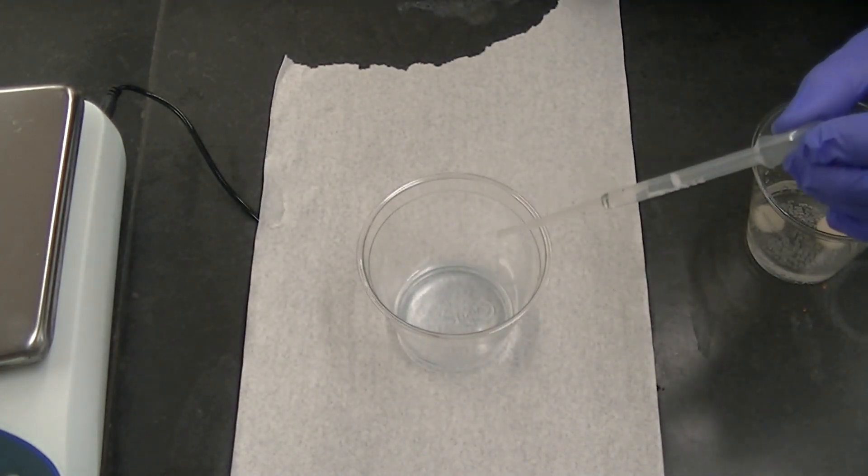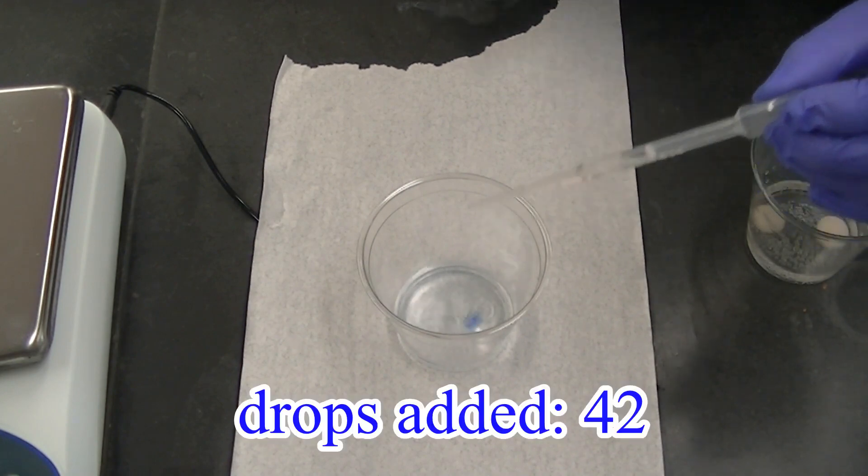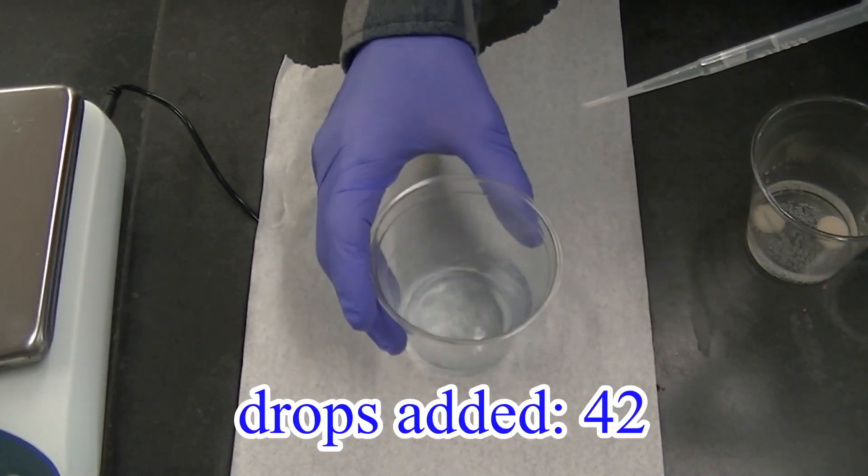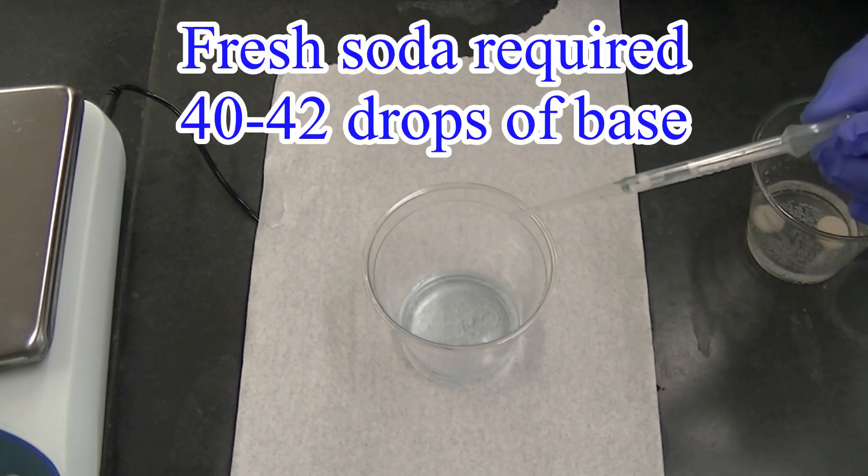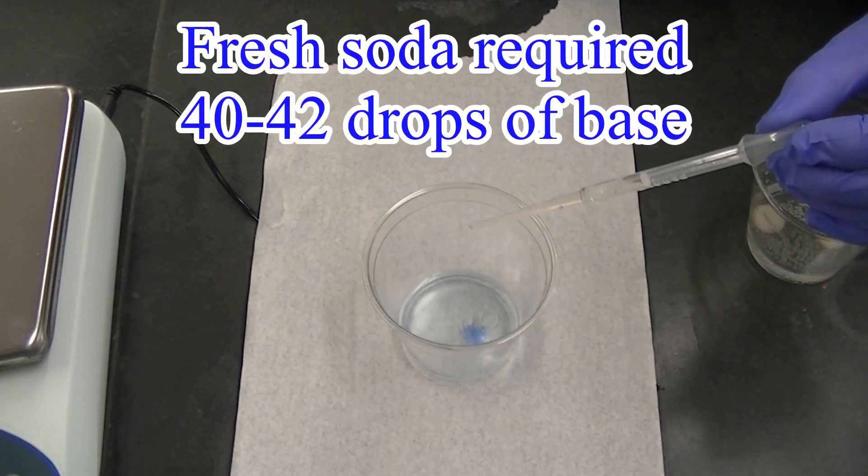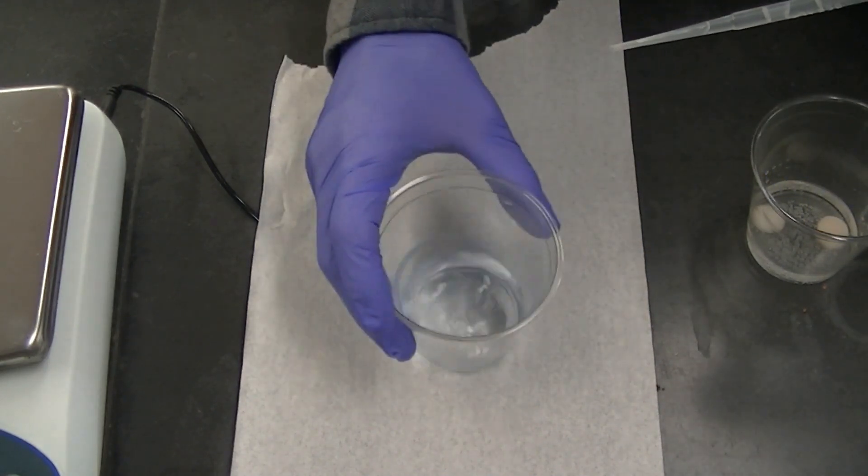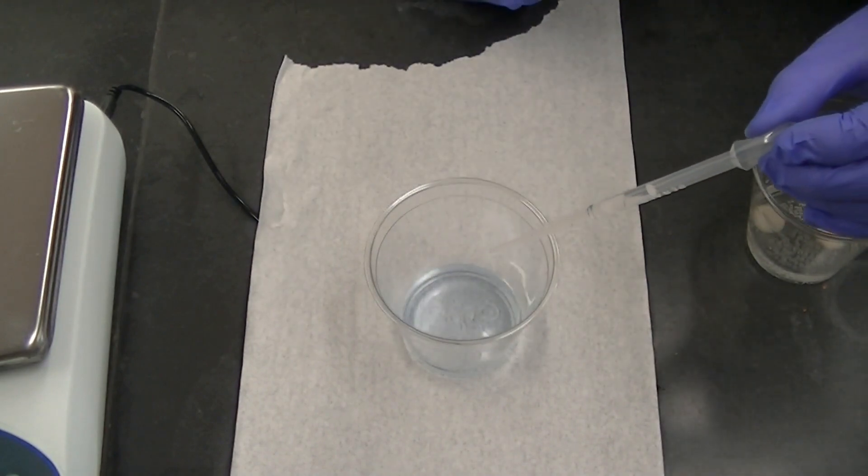You see the blue color? Let's add another one just to be sure. Sure enough that blue color is persisting. It looks like we've neutralized the acid in the soda. I'll add another drop and sure enough we're seeing the blue color get darker as I continue to add base.